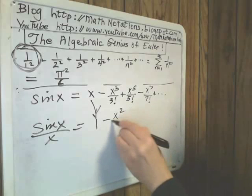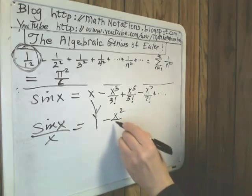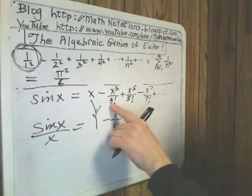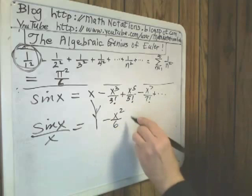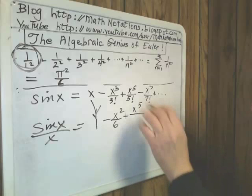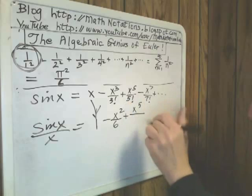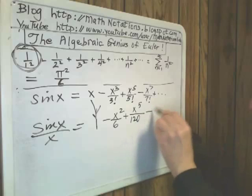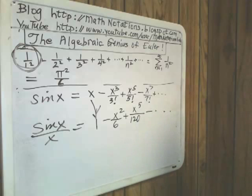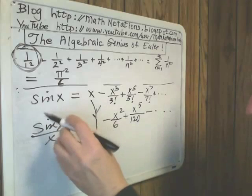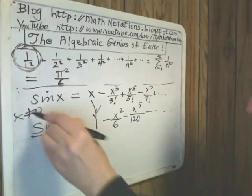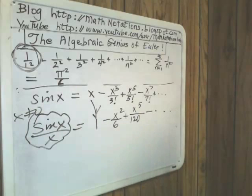Minus x squared over 3 factorial, which I'll write as 6. That means 3 times 2 times 1, which is 6. Plus x to the 5th over 5 factorial, that's 5 times 4 times 3 times 2 times 1, et cetera. And again, for x not equal to 0, he asked himself, I suppose, what are the values of x which make this ratio equal to 0? And he knew it was all those integer multiples of pi, but I can't include 0 this time. So pi, negative pi, negative 2 pi...